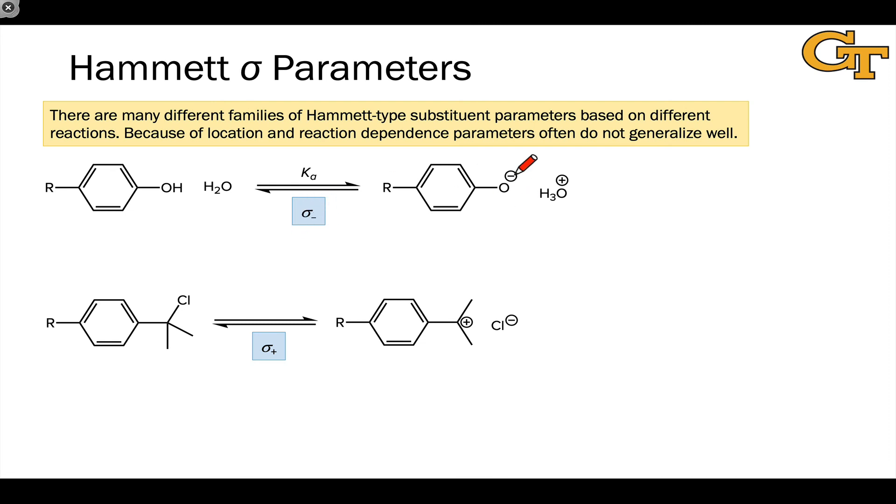In reactions where an intermediate is formed where we can delocalize charge directly onto the substituent, sigma p and sigma m and even sigma prime may not be our best choice of Hammett parameter. For this reason, sigma minus and sigma plus were developed and these parameters are based on reactions where the negative charge can delocalize into the substituent or positive charge. In the case of sigma minus, this is still a proton transfer reaction, but it's of a phenol and the negative charge, the electrons that are placed on oxygen can now be delocalized into the substituent if it's electron withdrawing. Likewise, for this dissociation of this benzylic chloride for sigma plus, now if R is electron donating, we can actually push electrons to show the delocalization of positive charge in this intermediate.